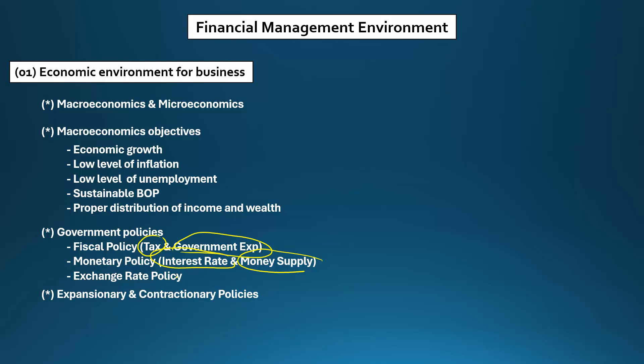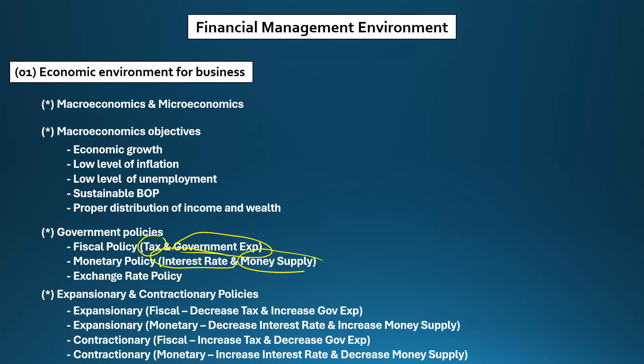Next, you should know expansionary and contractionary policies. Expansionary policies — both fiscal and monetary — mean increasing economic activities. Expansionary fiscal policies are: decrease taxation and increase government expenditures. Expansionary monetary policies are: decrease interest rates and increase money supply.